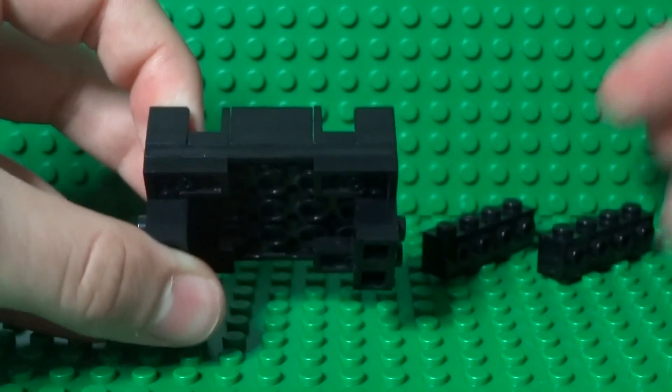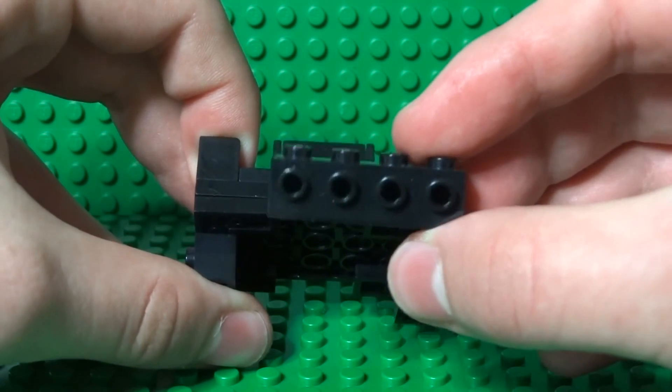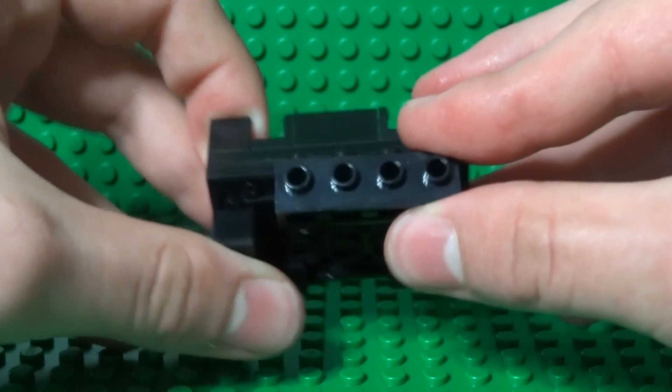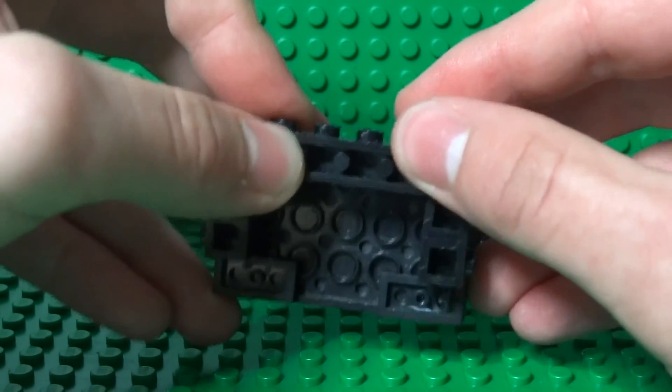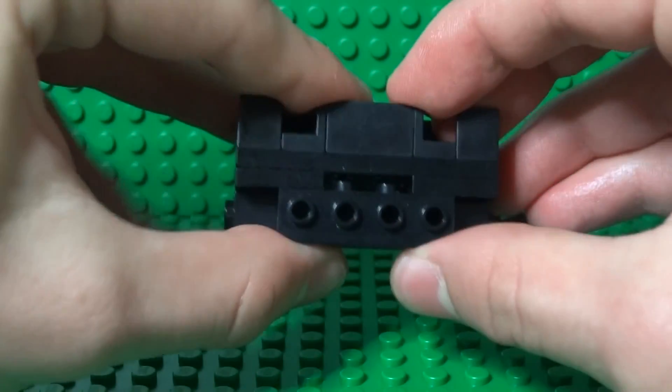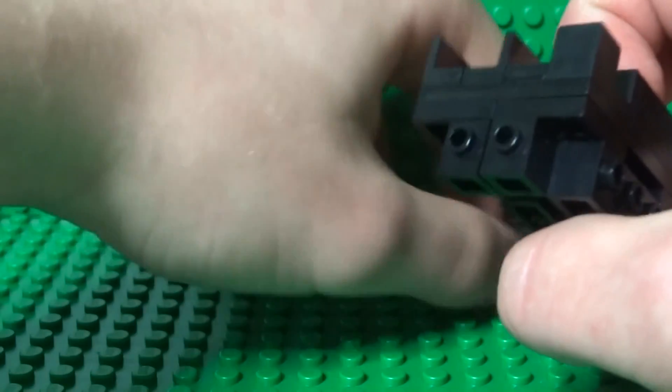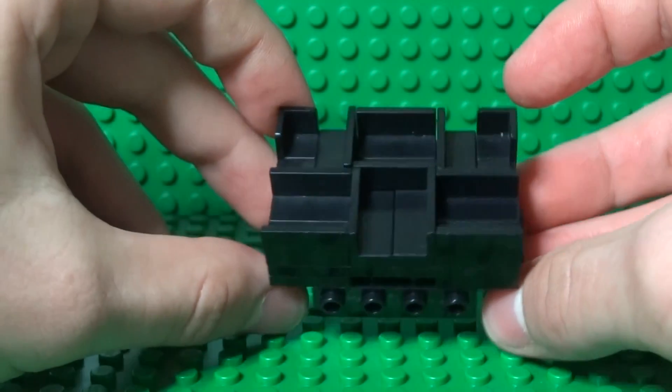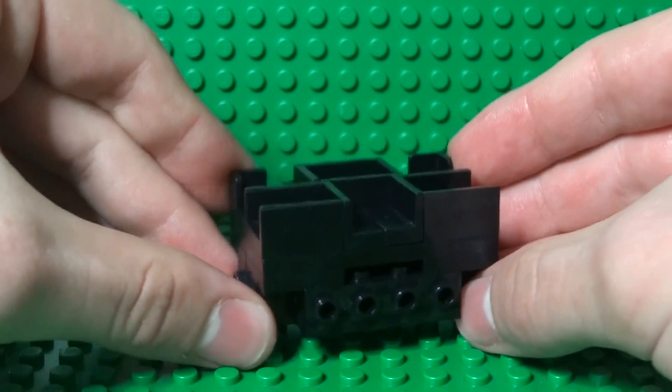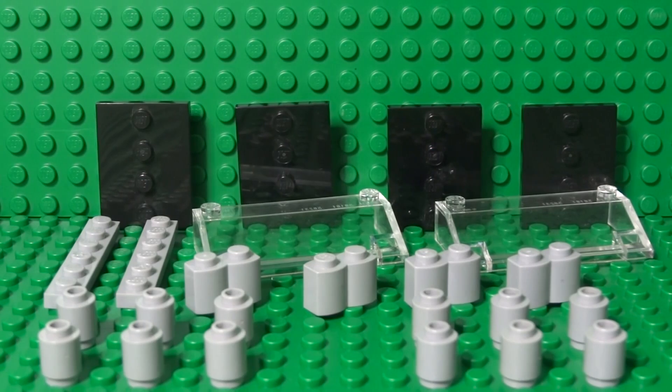Now to finish this bit off, take your two 1 by 4 bricks with the studs on the side and just place them there facing outwards. And there you go, you have the base of your Lego salad bar.